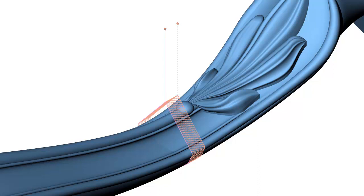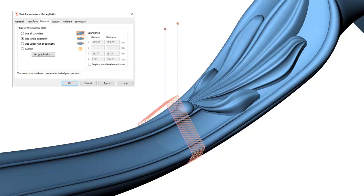This can however easily be solved by changing the part parameters. You can set the material block to Use whole geometry. The toolpath then all of a sudden will look quite different.